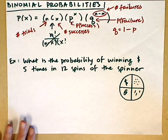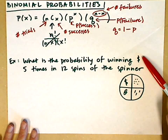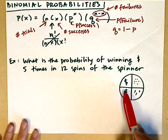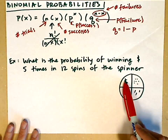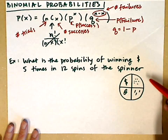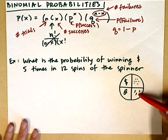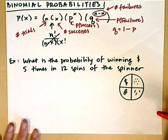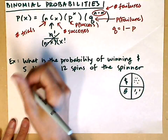Here's our example: what is the probability of winning money five times in 12 spins of the spinner? Here's our spinner — we've got four equal spaces. Of course, we want to win money. Our other choices are dirt, toothpicks, and paperclips. So we prefer to win money.